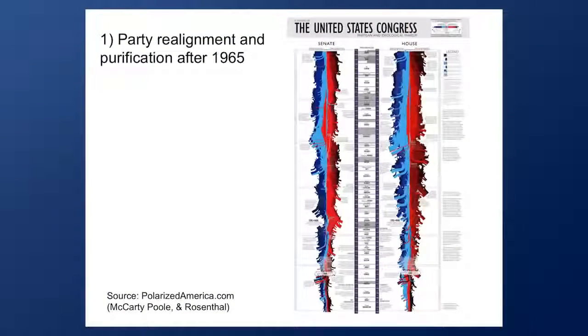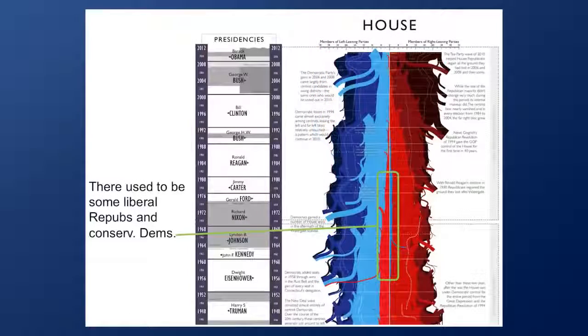Democrats blame George W. Bush for the rising polarization. Republicans blame Barack Obama. But the truth is that there was a 10-car freight train of polarizing trends crashing down the tracks of our democracy, and neither man could have done anything to stop it. These are graphs of data on polarization, showing the House of Representatives and the Senate from the founding fathers to today. Let me zoom in on the modern era in the House.